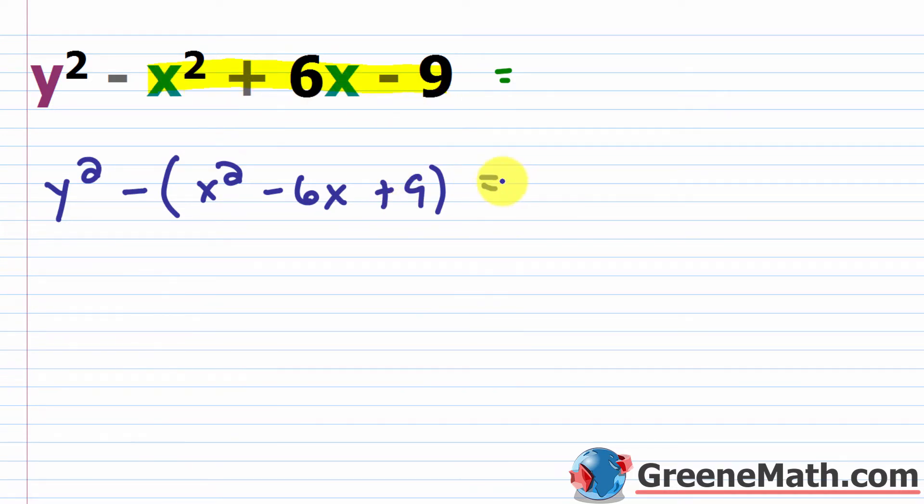So now I can factor this and say this is y squared minus, inside the parentheses, I'm going to do x minus 3, quantity being squared.